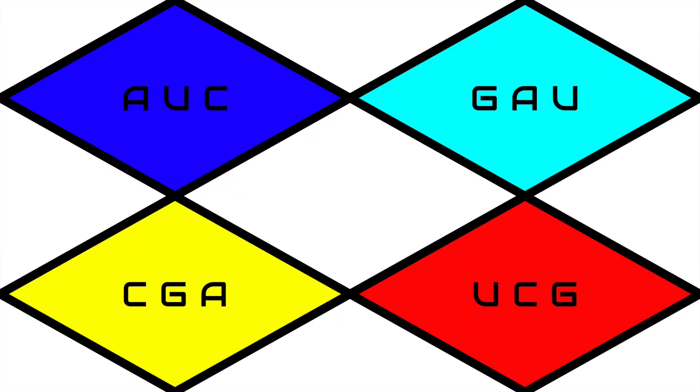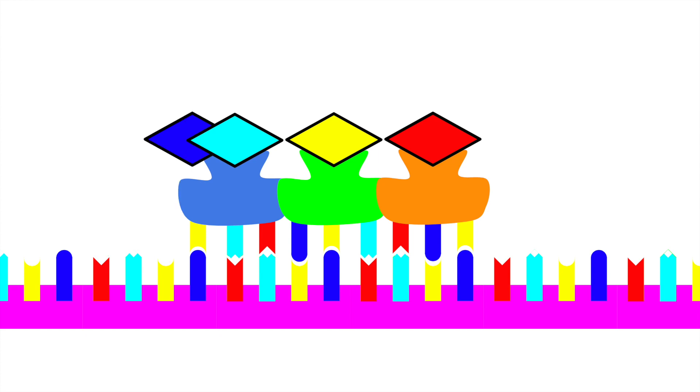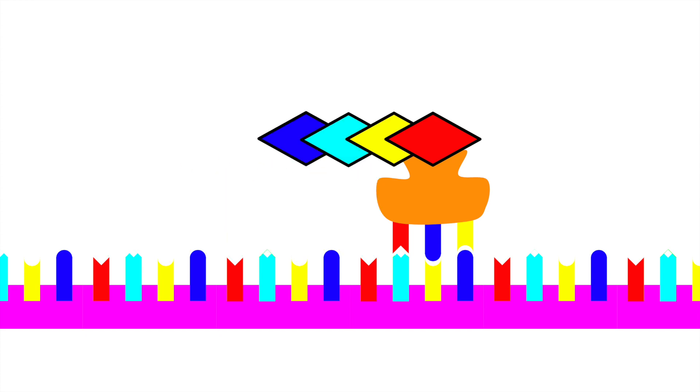Each amino acid has a specific three letters of genetic code, or codon, to bond to. As they go along the RNA, the amino acids connect together to form a protein. Once a protein is finished, a codon tells the amino acids to stop and complete the protein.